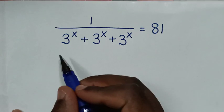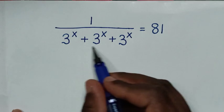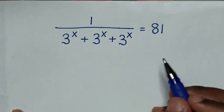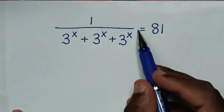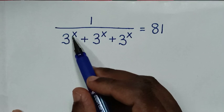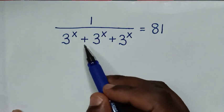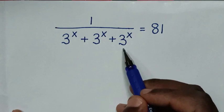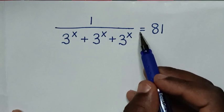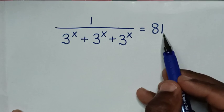Hello, you are welcome to solve this math problem, which is 1 over (3^x + 3^x + 3^x) is equal to 81.